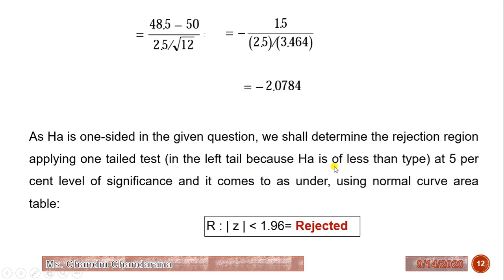We apply the test in the left tail because the alternative hypothesis is of the less-than type (mean of 48.5 is less than 50). Using the normal curve area table, the Z value of minus 2.08 falls in the rejection region — its absolute value exceeds 1.96. Therefore, the null hypothesis is rejected. These are the problems related to the Z test.